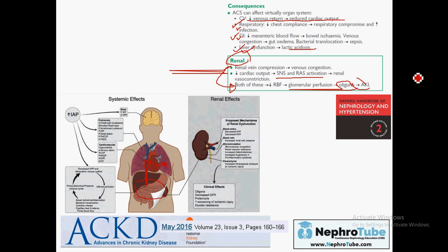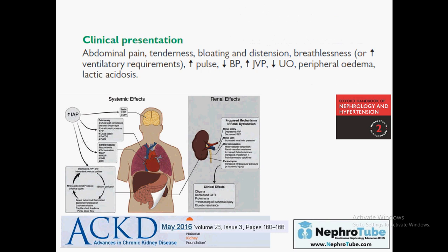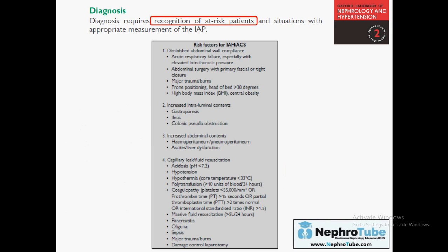The end result regarding the kidneys in acute compartment syndrome is decreased renal perfusion and acute kidney injury. To treat this acute kidney injury, you must decompress and decrease the abdominal pressure to facilitate kidney perfusion. Consequently, patients present with abdominal pain and tenderness, difficulty breathing, high pulse, low blood pressure, increased jugular venous pressure, decreased urine output, peripheral edema, and lactic acidosis.